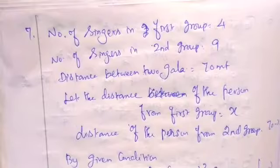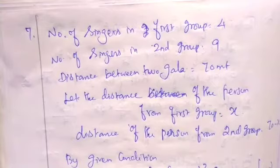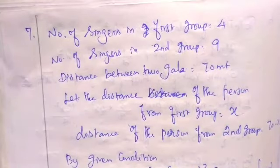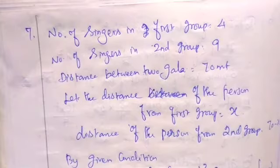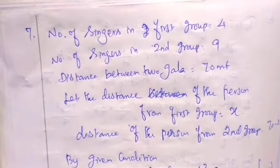Hello students, today we are going to talk about the 10th standard exercise 3.2, problem 7. In the first gallery, a group of 4 singers were singing, and in the second gallery, 9 singers were singing. The two galleries are separated by a distance of 70 meters. Where should a person stand to hear the same intensity of the singers' voices?